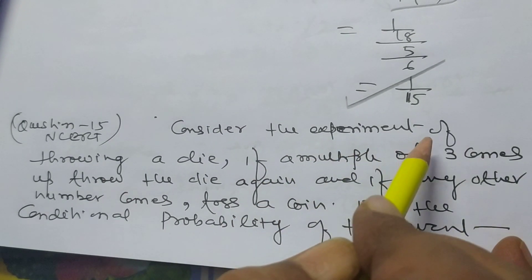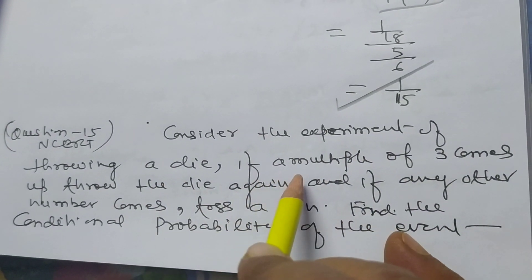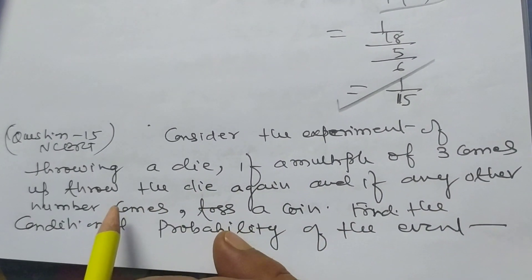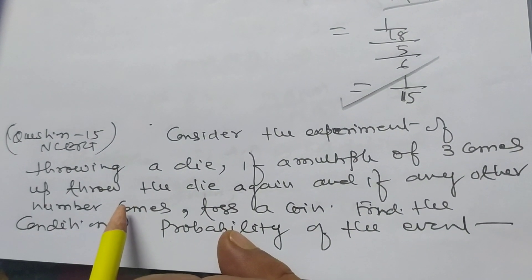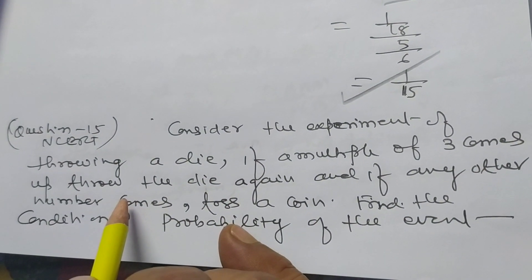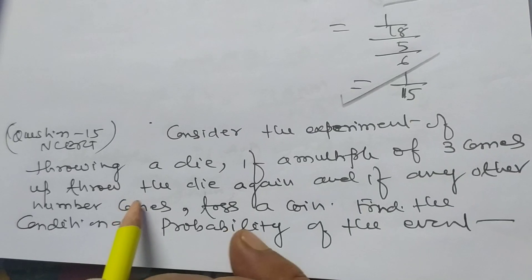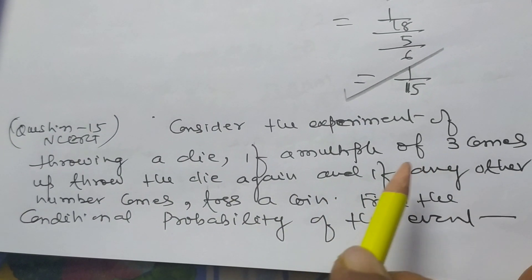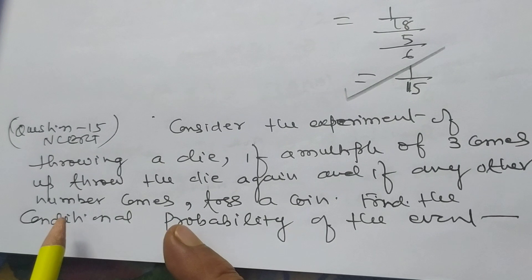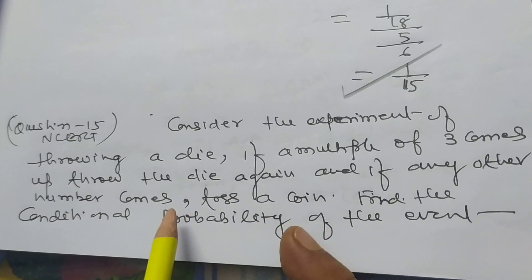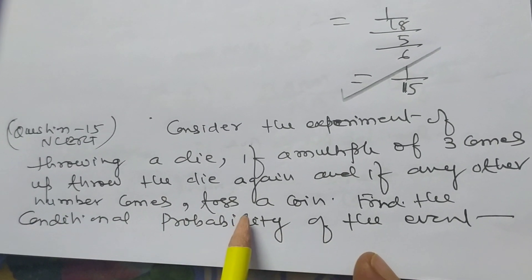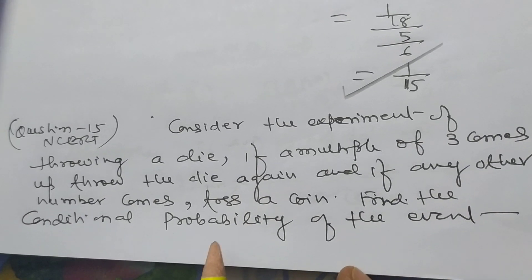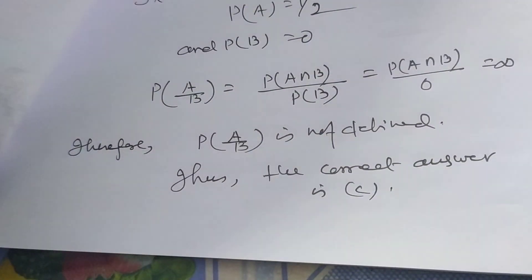Now I want to discuss Problem number 15. Consider the experiment of throwing a die. If a multiple of 3 comes up, throw the die again; if any other number comes up, toss a coin. Find the conditional probability of the event.